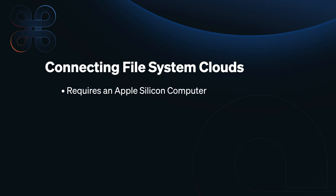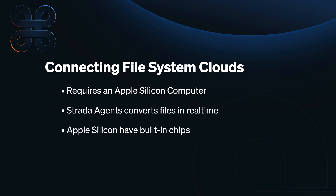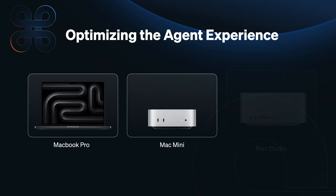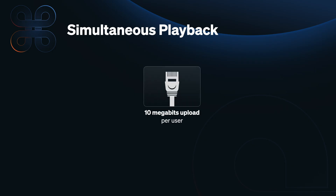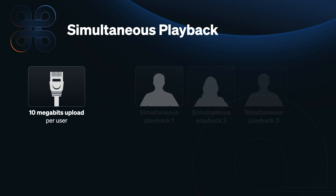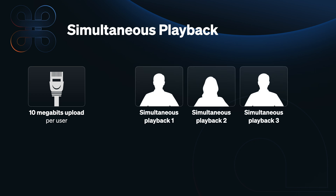Now, as your team grows, you'll always want to have a reliable remote experience, and that can be achieved by observing some best practices. Hosting a Strata agent requires an Apple Silicon computer. This is because the computer hosting the agent has to convert all these files on the fly, and Apple Silicon machines have built-in chips that make the conversion ultra-fast while maintaining super high quality. We've seen great results sharing files from an Apple M2 and M3 computer, often on MacBook Pros. Strata essentially needs about 10 megabits of upload bandwidth per simultaneous user. So if you want three collaborators to remotely access and play back three different files at the exact same time, you're going to need a minimum of 30 megabits of upload bandwidth available.